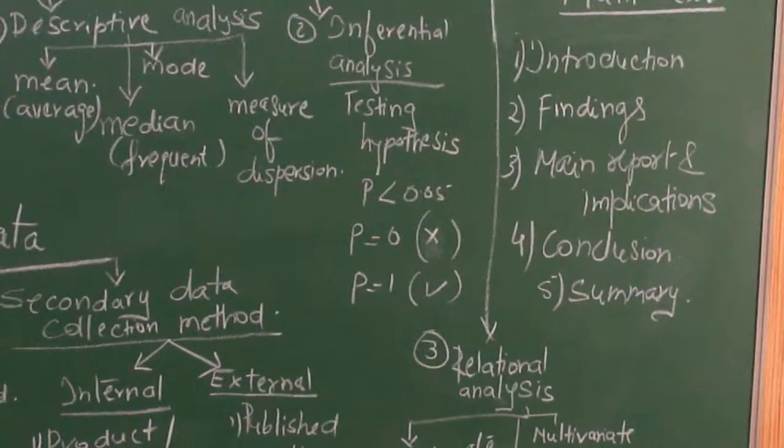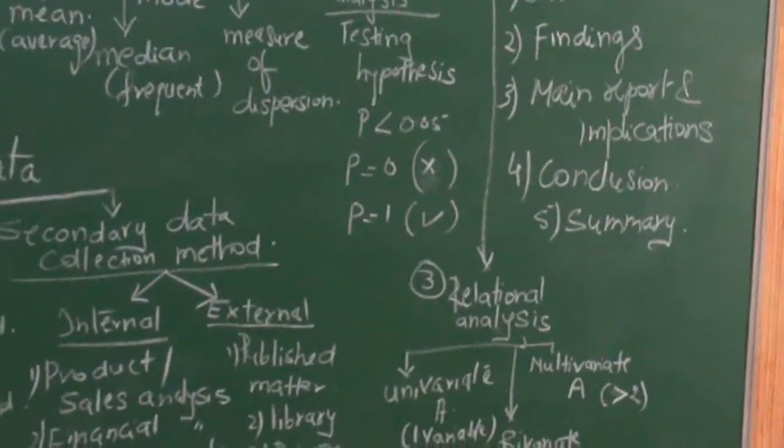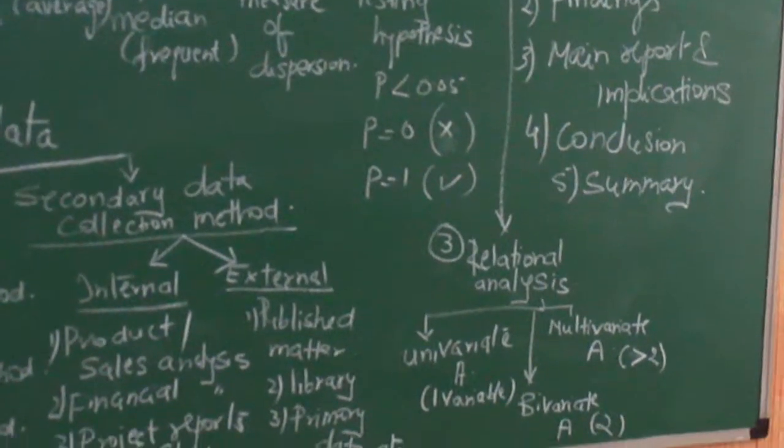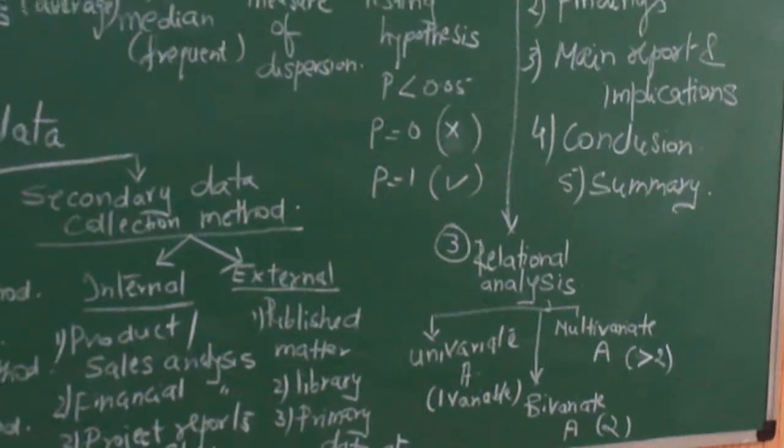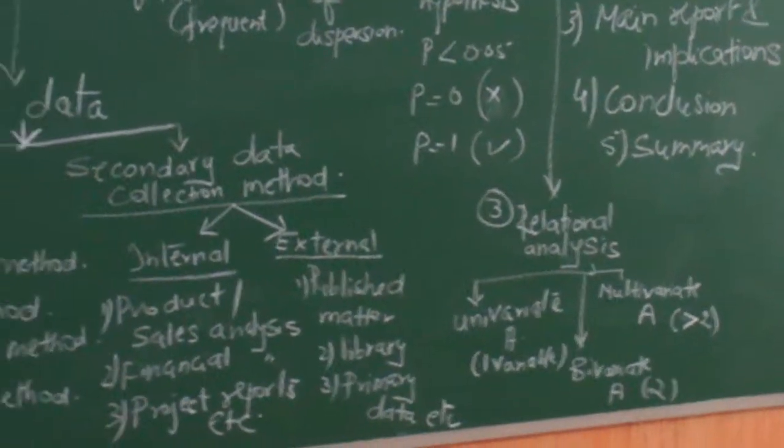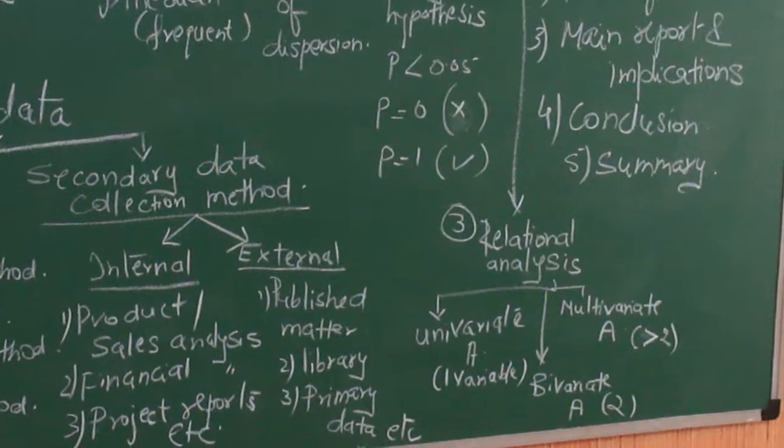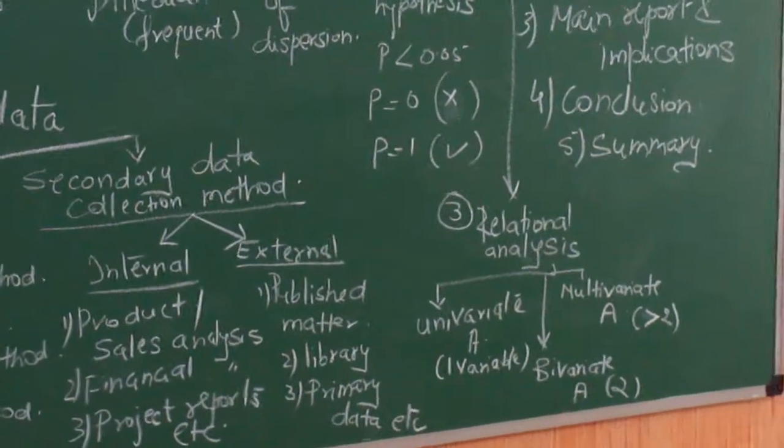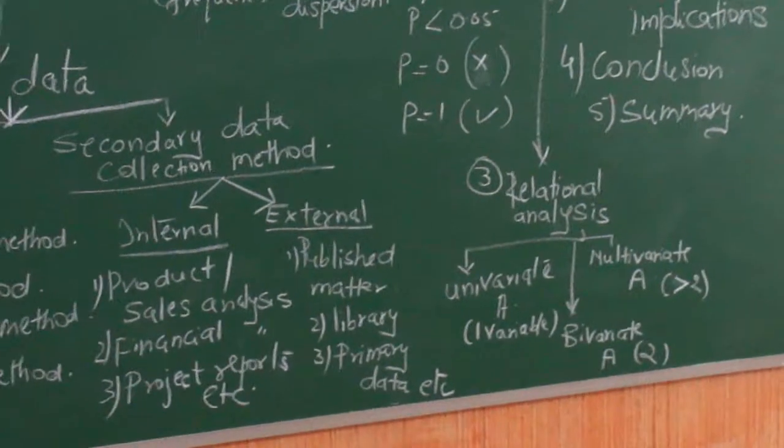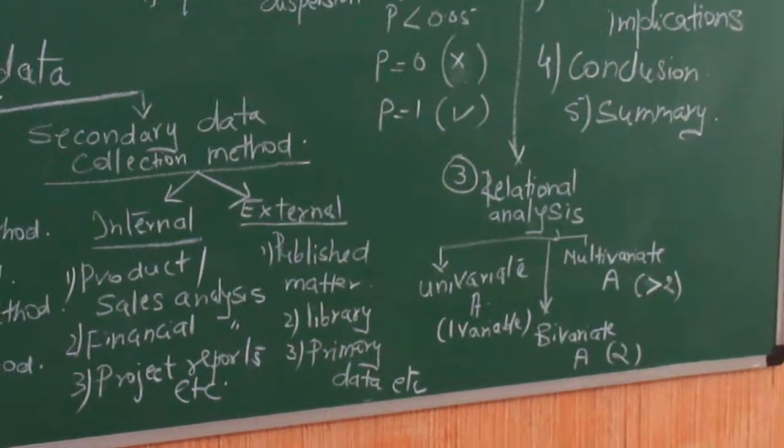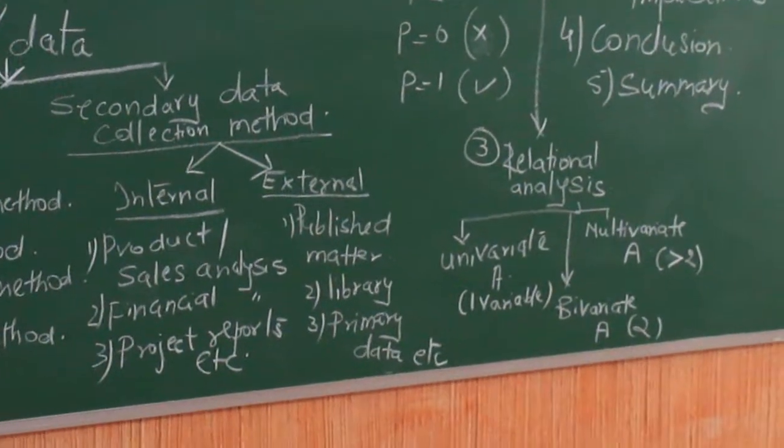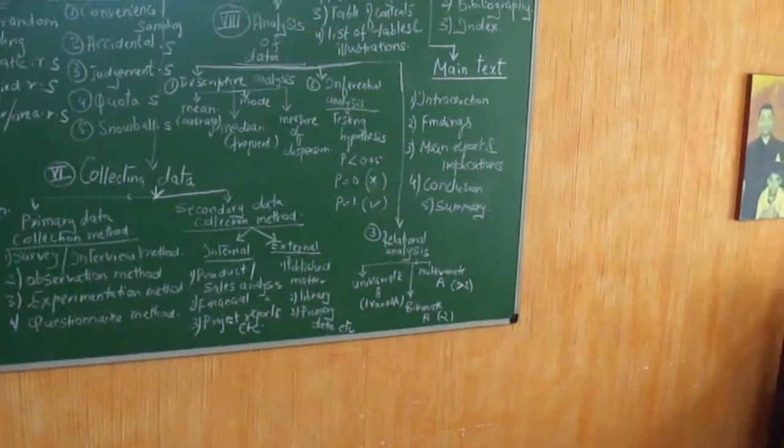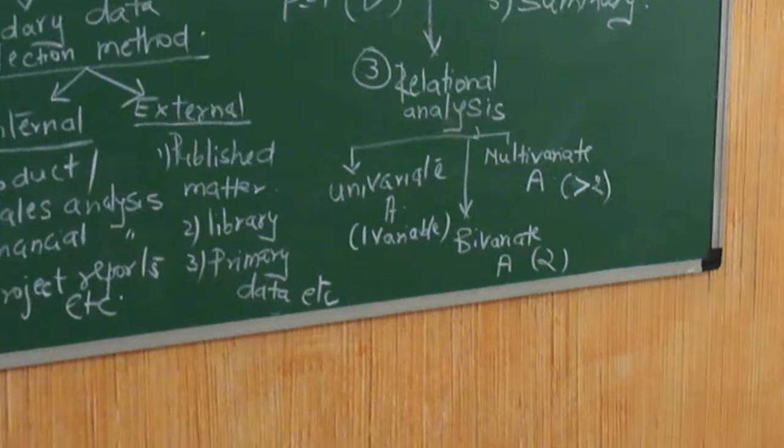Now in inferential analysis, the testing of the hypothesis is done. Whether what you had earlier said, whether that is right or wrong. If the probability at the end of the calculation is less than 0.05, not even 5%, then the chances, it should be less than 0.05 for that research to really take off. If the probability is 0, that means that event will never happen. And if the probability is equal to 1, that means that event will surely happen.